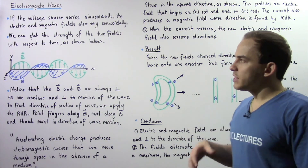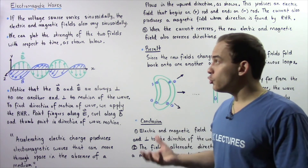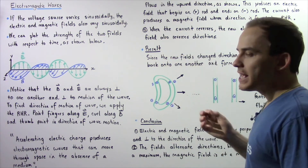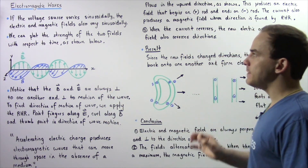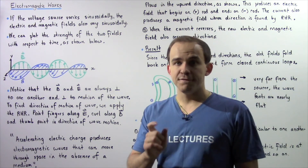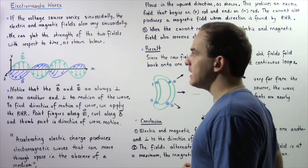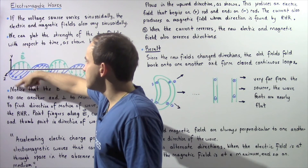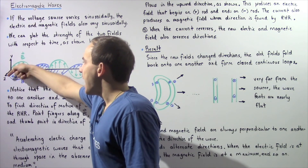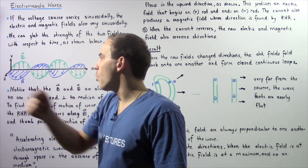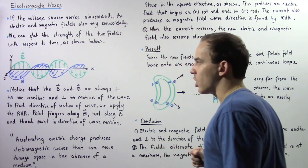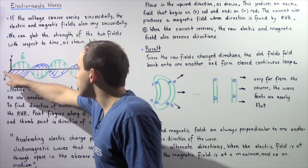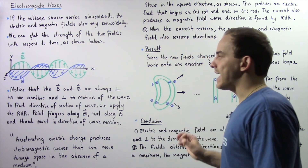Because an alternating current generator produces electromagnetic waves, if the voltage source varies sinusoidally, the strength of the electric and magnetic fields also varies sinusoidally. We can plot the strength of both fields with respect to position, where the green sinusoidal curve represents the electric field and the blue sinusoidal curve represents the magnetic field.